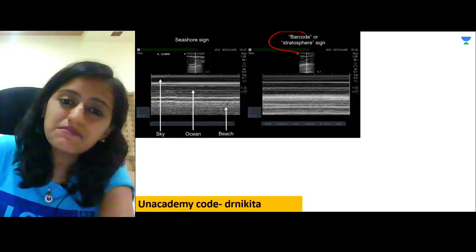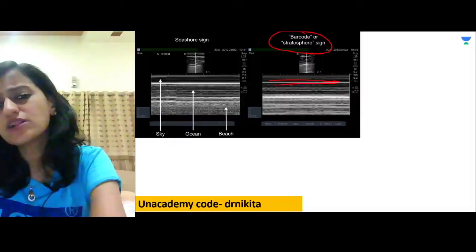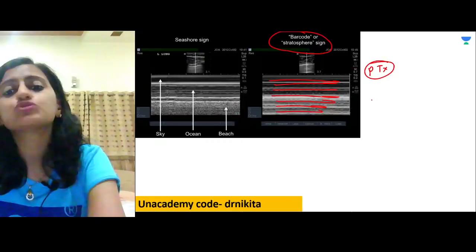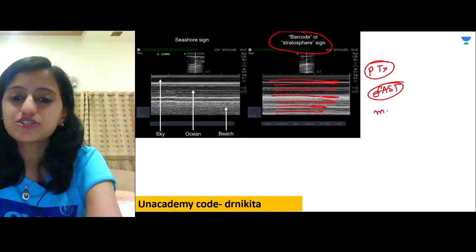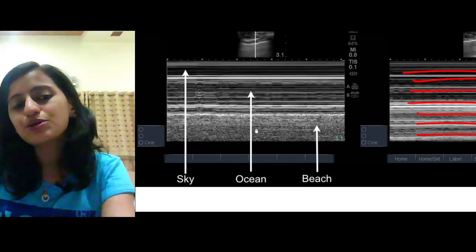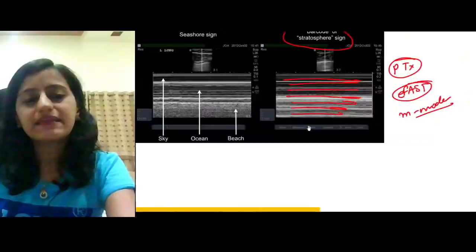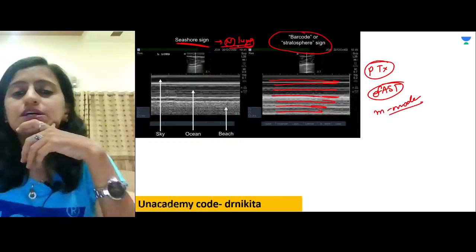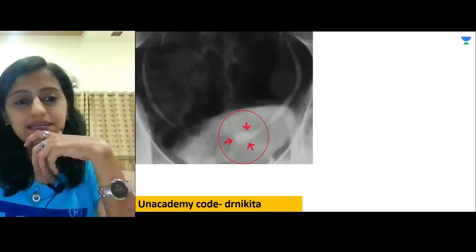The barcode or stratosphere sign on M-mode ultrasound (part of E-FAST) is seen with pneumothorax. Normal lung shows the seashore sign — granular appearance due to lung movement. Pneumothorax shows the barcode or stratosphere sign.